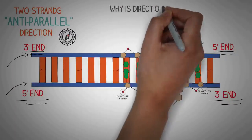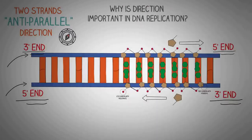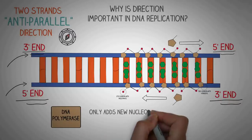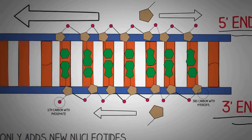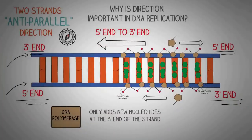The concept of direction is important in DNA replication because the main enzyme — DNA polymerase — can only add new nucleotides at the 3' end of the DNA. This means DNA replication can only progress from the 5' end to the 3' end. We will get into further details of directionality in DNA replication later in this video.